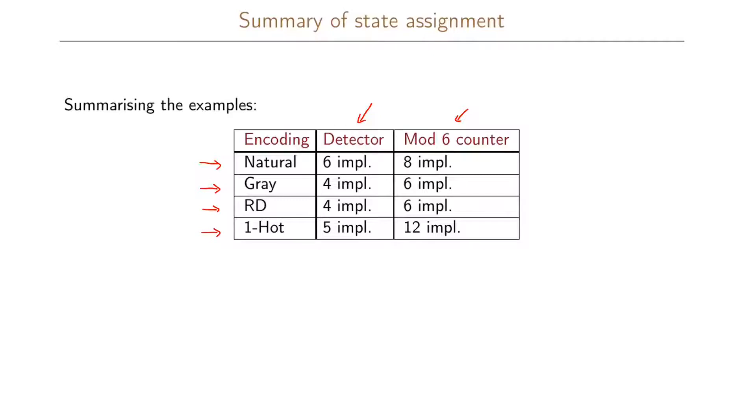We start by looking at our detector problem. For the NBCD or natural state assignment or the natural coding of our states we had six implicants. For the gray coding and reduced dependency coding we had only four implicants instead. And when we used the one hot state assignment strategy we instead had five implicants.